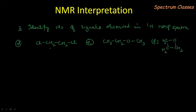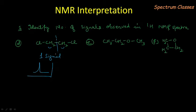Here we are having CH2 single bond CH2 and Cl-Cl. We can see the symmetry in this molecule — this CH2 and this CH2 are of the same type. So we are having one signal in this molecule, one peak for four protons.